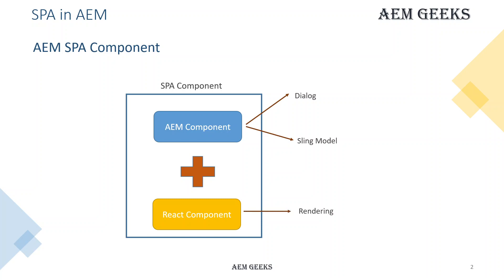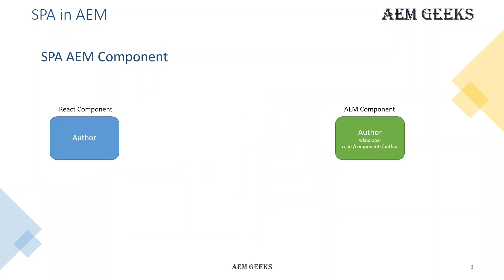The React component is used for rendering, but the content for rendering is provided by the sling model, meaning the content exporter. So the AEM component is used for two things: one is the dialogue for storing user data, and the sling model to export the values you saved to the React component. These two sections must be mapped because the AEM component is server-side and the React component is client-side. The SPA framework provides the functionality to map the AEM component to the React component.